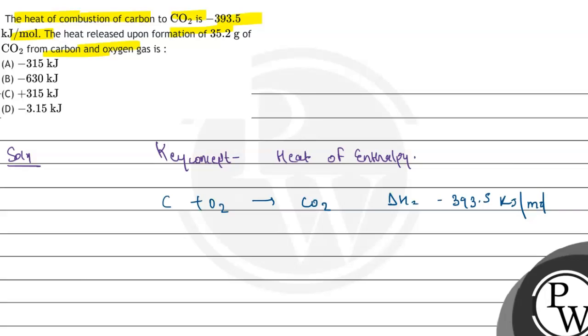We have to find out the heat released upon formation of 35.2 grams of CO2 from carbon and oxygen gas. So this much delta H is released for one mole of CO2.